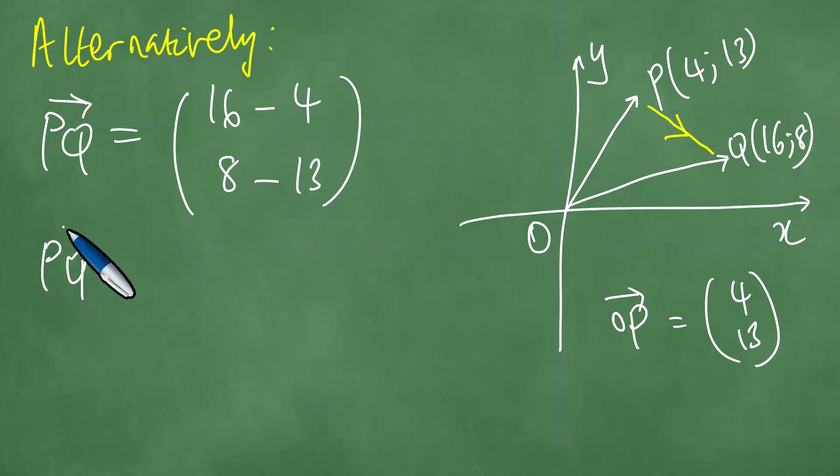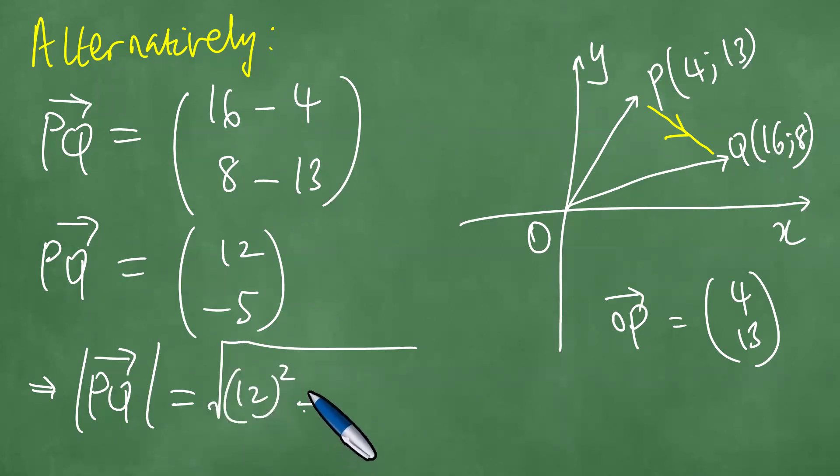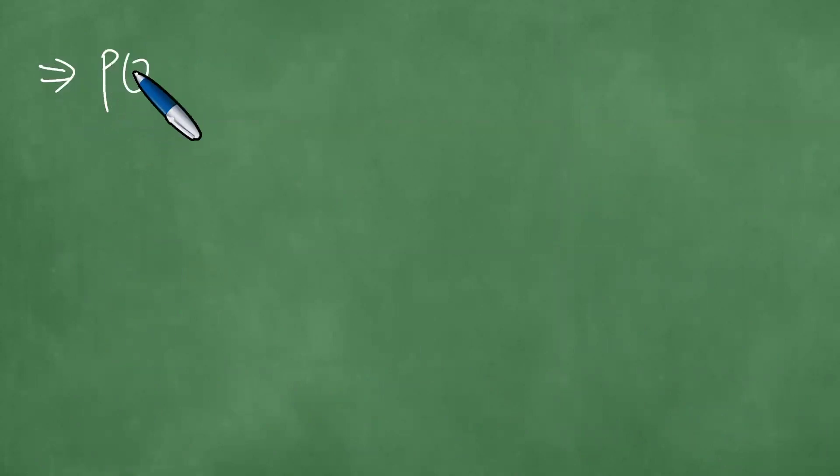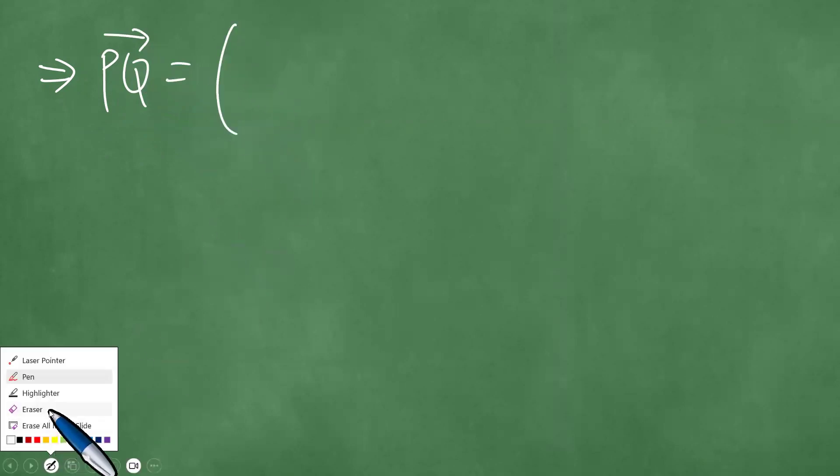So that the vector PQ can be determined as 12 minus 5. The magnitude is the square root of 12 squared plus minus 5 squared. 12 squared is 144, so you have 144 plus 25, which is 169. And this is 13 units. Therefore, PQ is actually the same as 13 units.